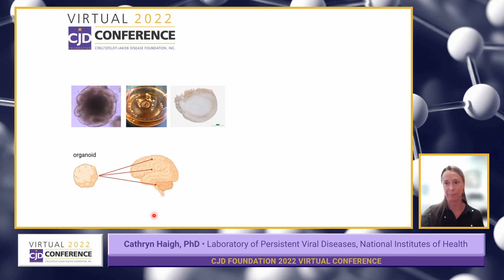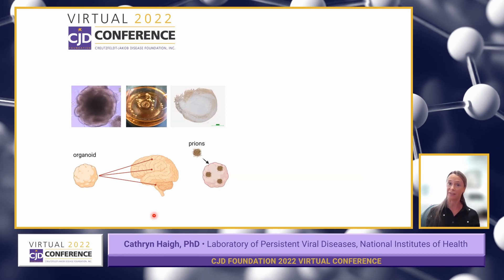We're going to make these different brain region organoids, infect them with our different subtypes — our different shapes — and look at how the cells within those organoids are affected.